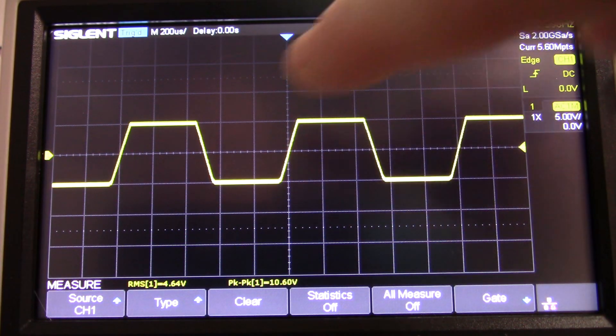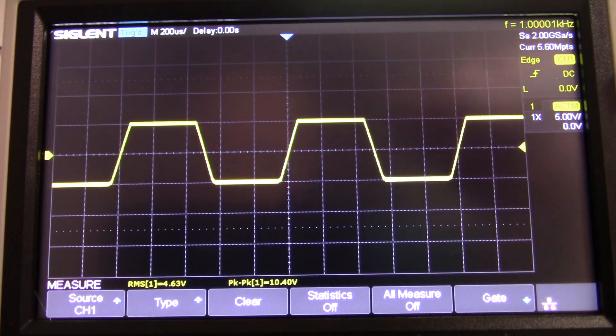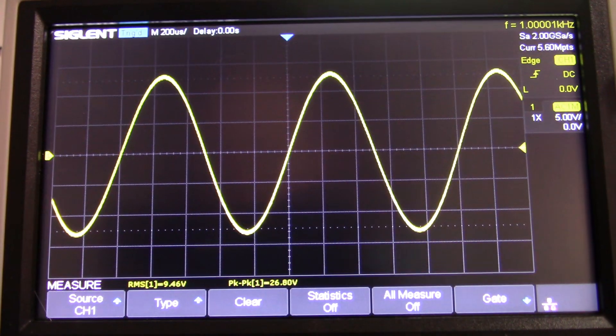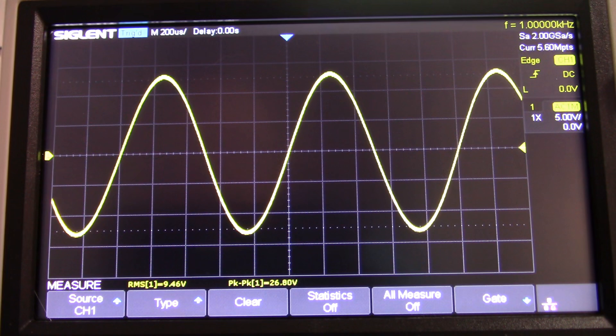The next op-amp we'll look at here is the 4556. Most of these op-amps will handle somewhere between 25, maybe up to 40 milliamps, but the 4556 is designed to have a maximum output current of 70 milliamps.